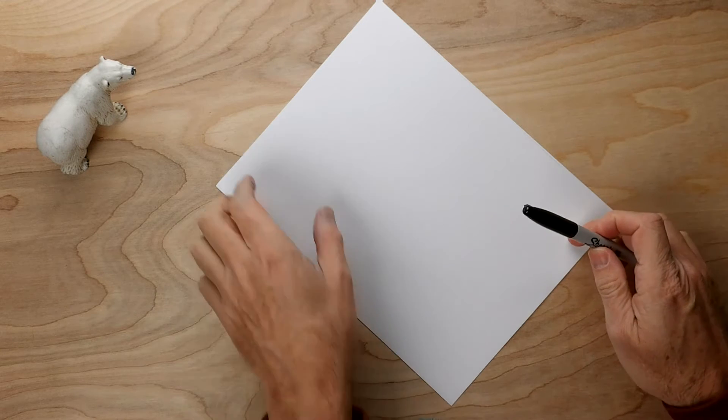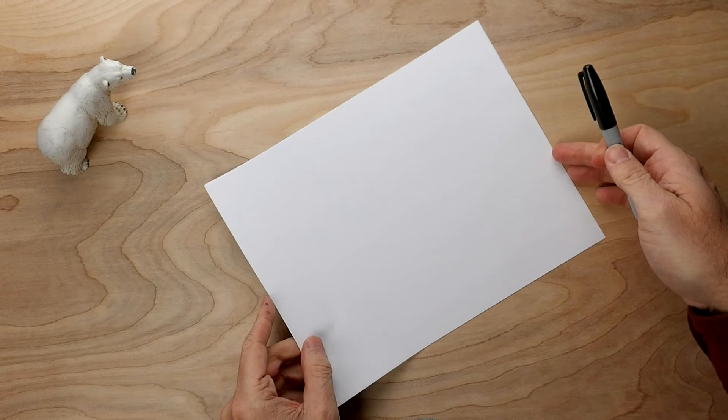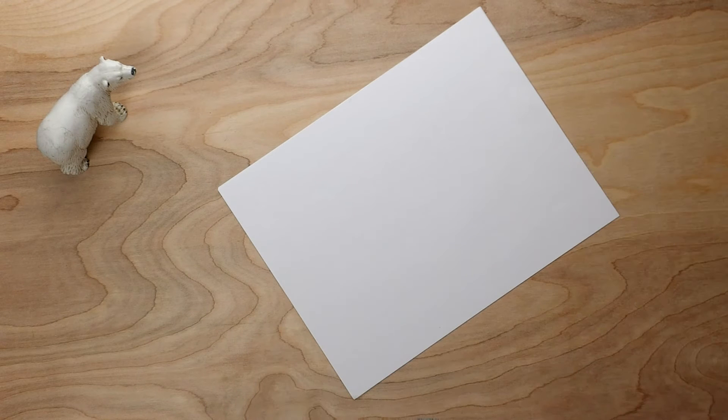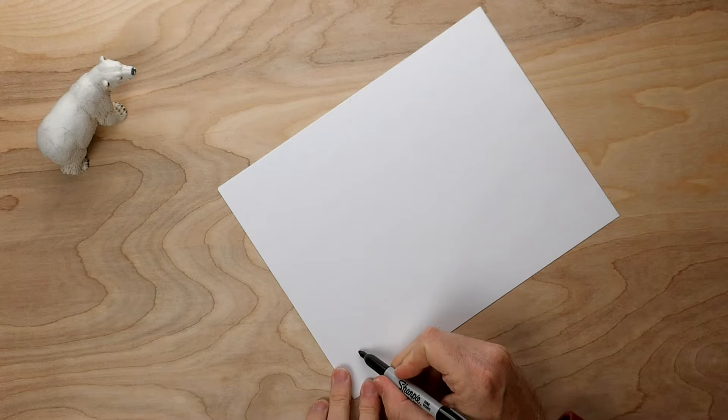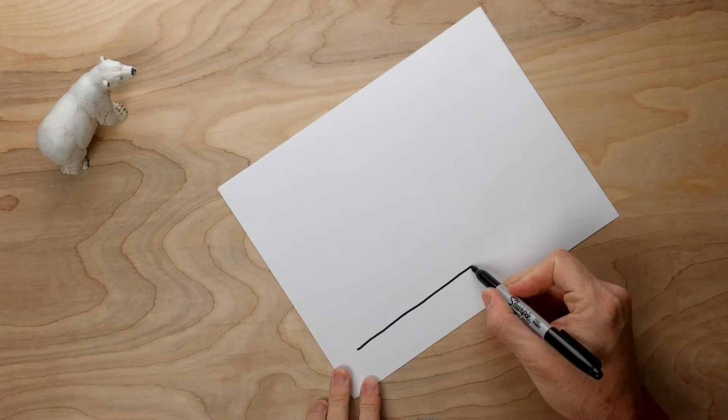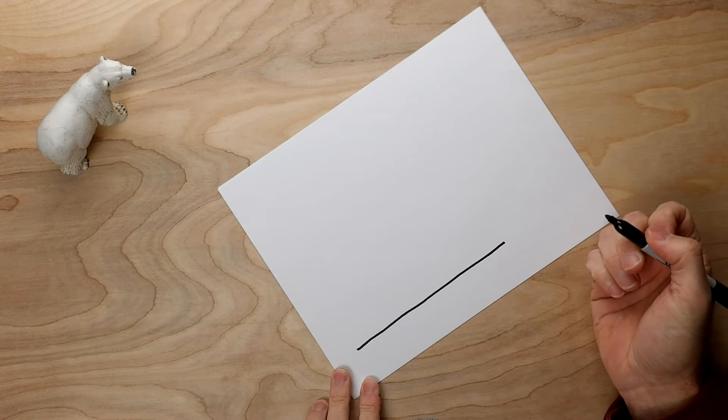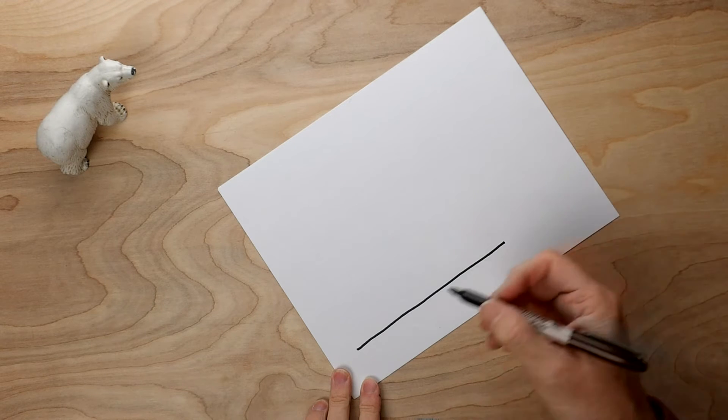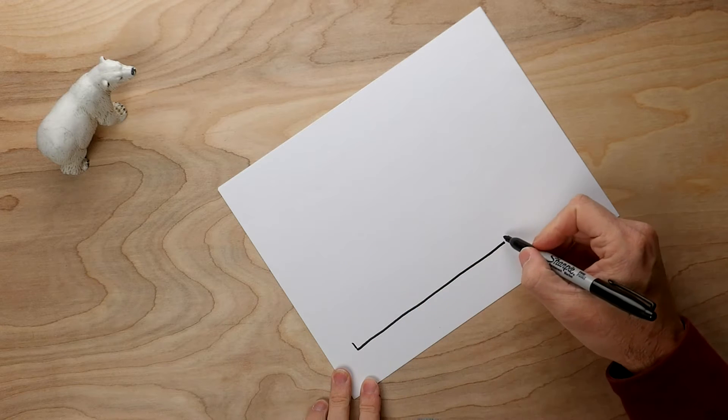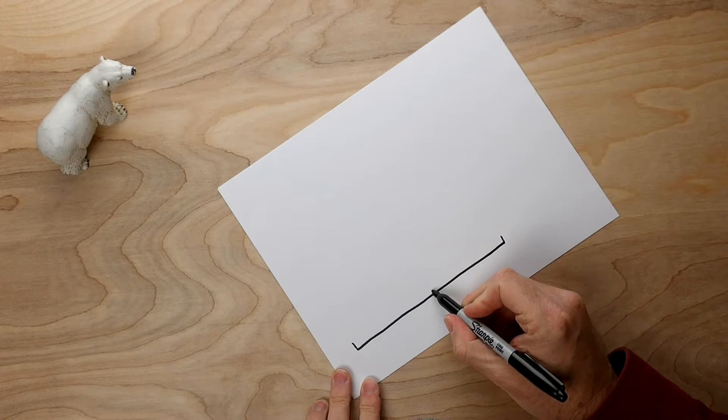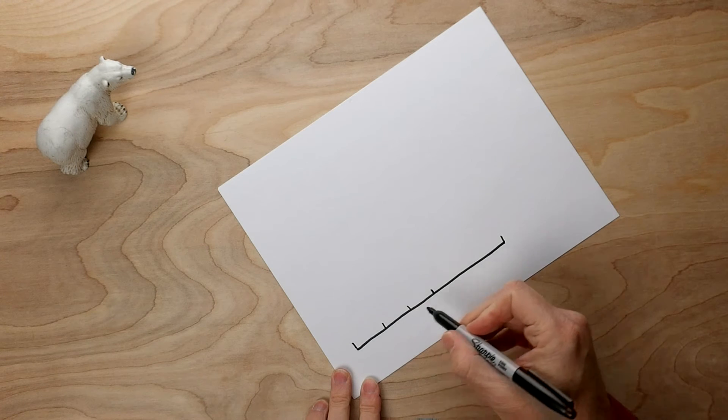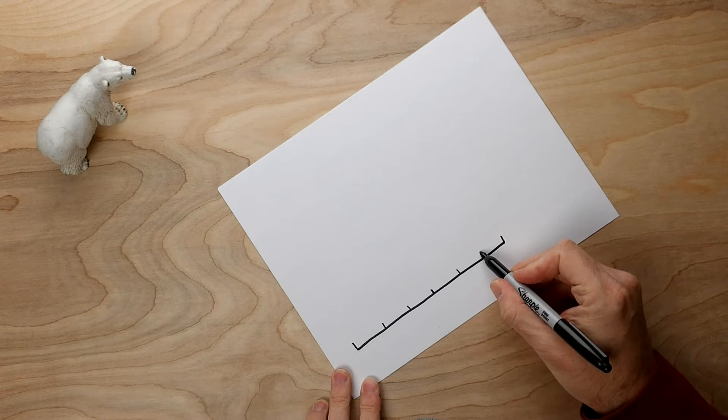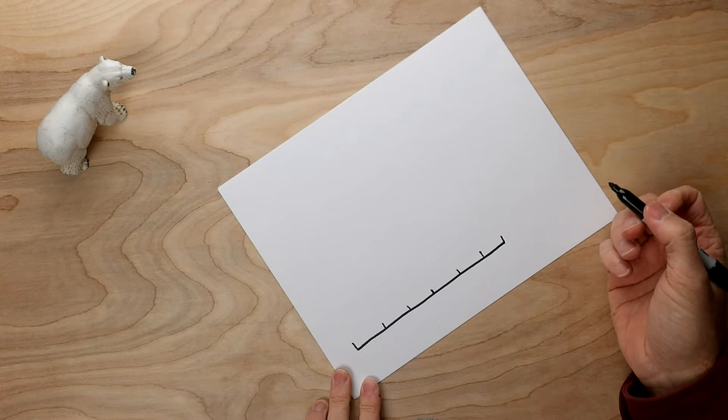So the first thing to do is take your paper and turn it so you can draw on it the right way. And we're going to start with a line. And this line is going to go across a good part of the paper, but not all of it, so be careful. So we're going to start by drawing a line about that long. And then we're going to put marks on either end and a mark in the middle. And then breaking up this line, we want to have two more marks, making about equal spaces along the way.